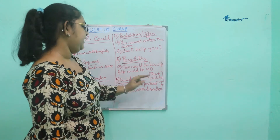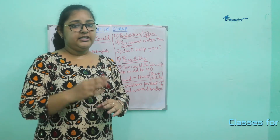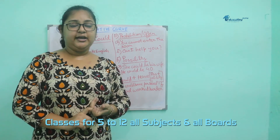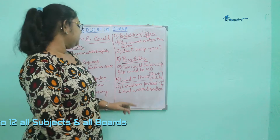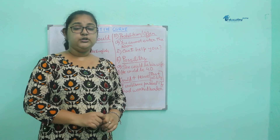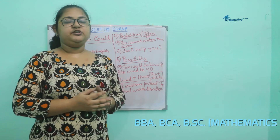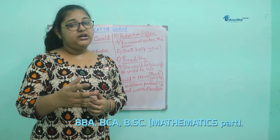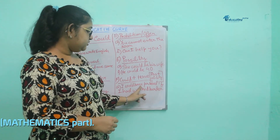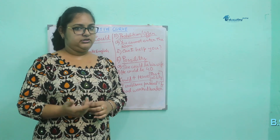How do we use could with have? This form is used when we want to describe past regret — certain things that could have taken place but did not, and so we are regretting it now. For example: I could have passed if I had worked harder. We have failed the examination, and we are wishing we had worked harder. Could have denotes an action that could have happened in the past but did not happen, and we are regretting it.